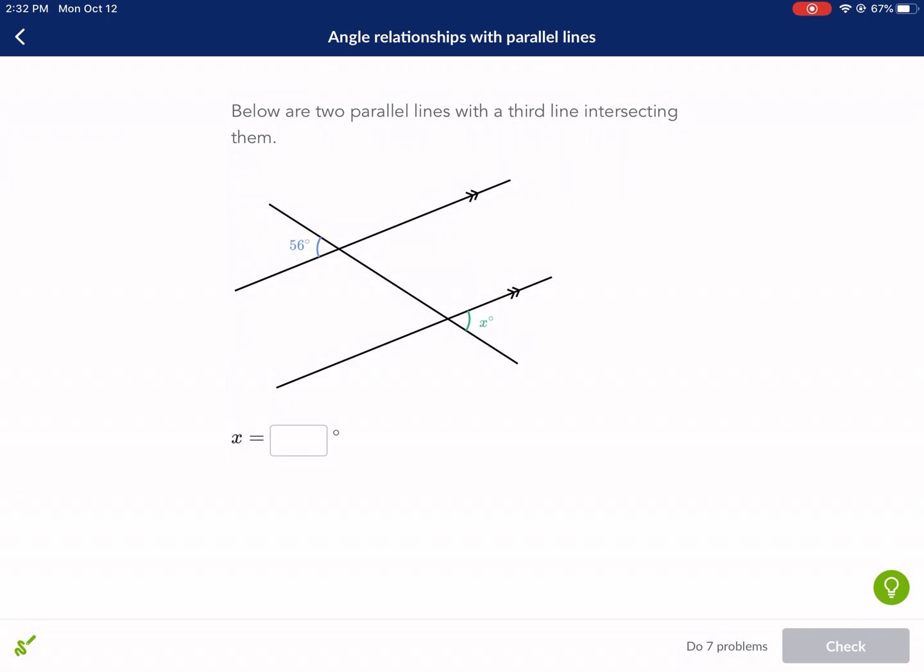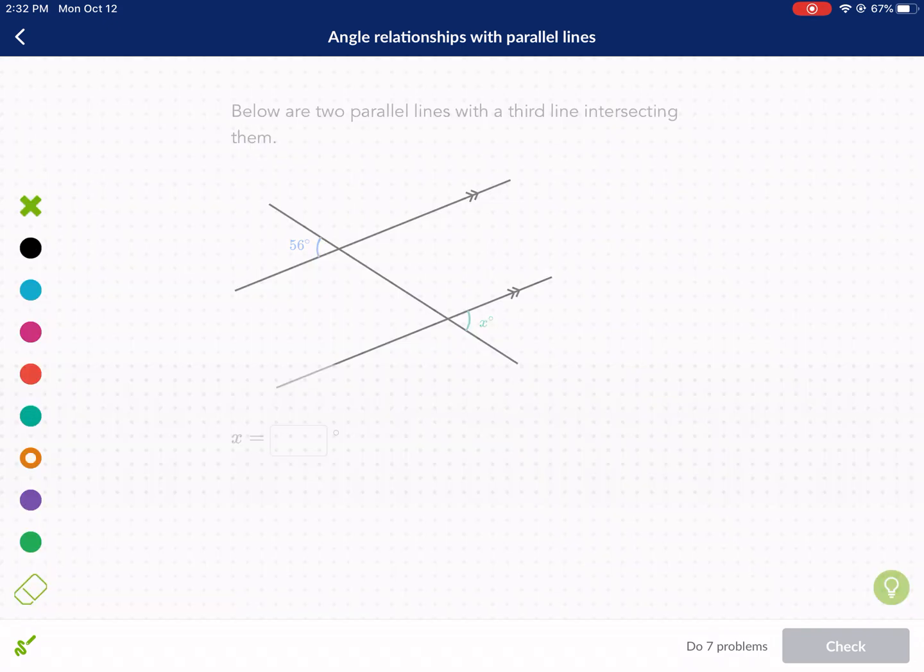That third line is called a transversal, by the way. One thing of note, you want to make sure that you see this anytime you have an assignment. You need to understand that these lines, these lines saying that they're parallel,